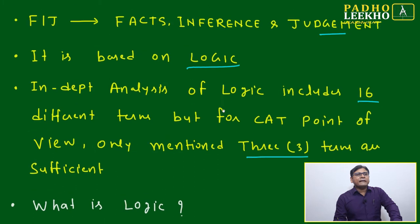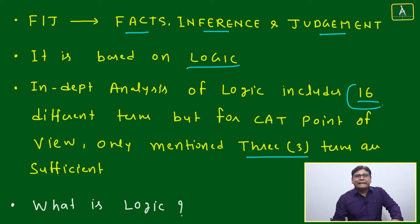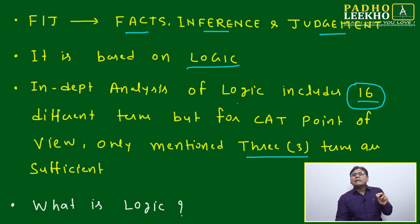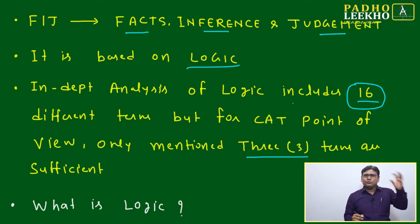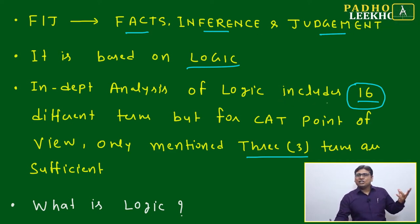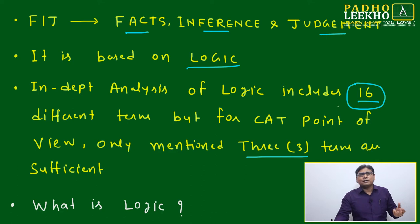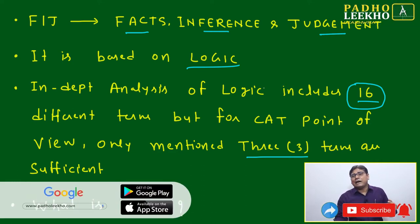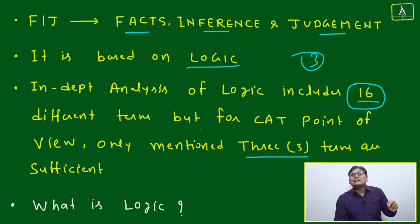For CAT purposes, only three terms are sufficient out of the 16 different terms in an in-depth analysis of logic. Those three terms are Facts, Inference, and Judgment — F, I, and J. The 16 terms in logic include facts, inference, judgment, opinion, observations, and so many more, all interrelated to each other.